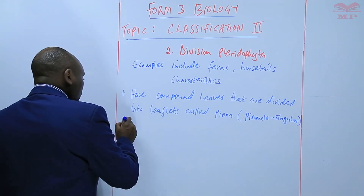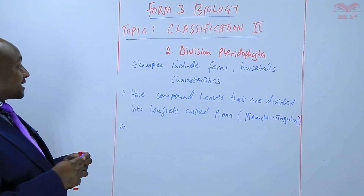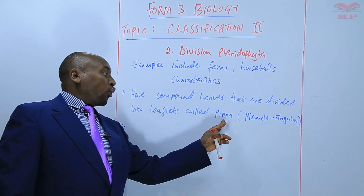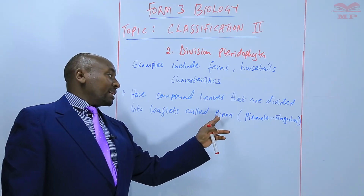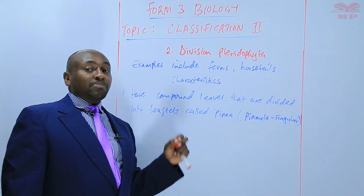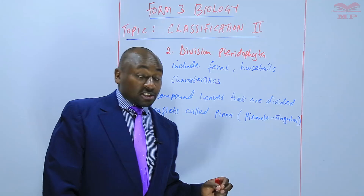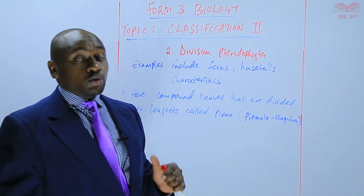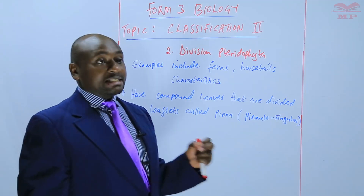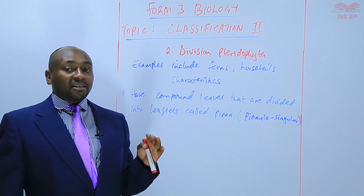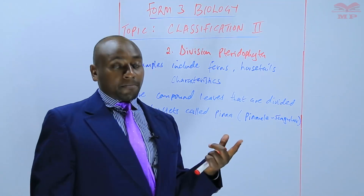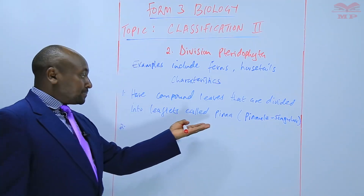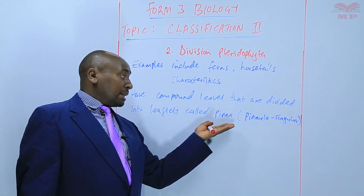The second characteristic is an extension of the first: on the underside of the pinna, which are the leaflets, are the spore-bearing structures that we refer to as the sporangia. Sporangia is the plural; the singular is sporangium. The sporangium bears the spores. So on the lower side of the leaflets or of the pinna, you'll observe some clustered groupings of sporangia.